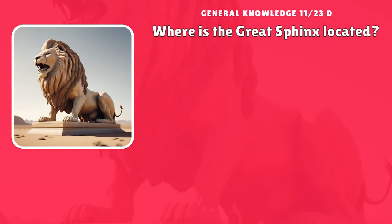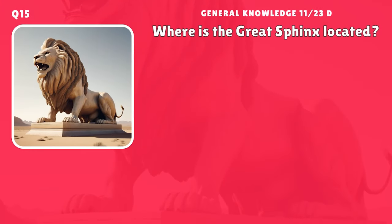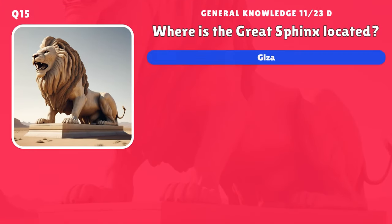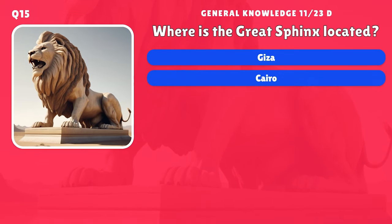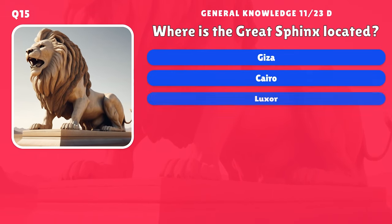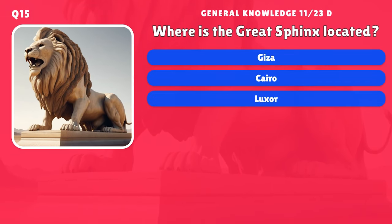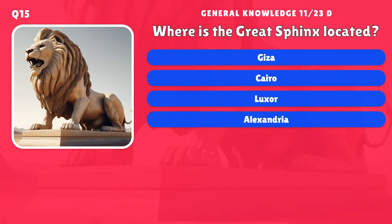Where is the Great Sphinx located? A) Giza, B) Cairo, C) Luxor, D) Alexandria.